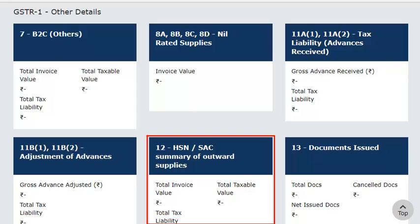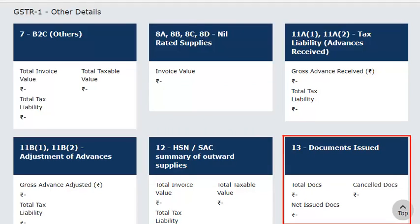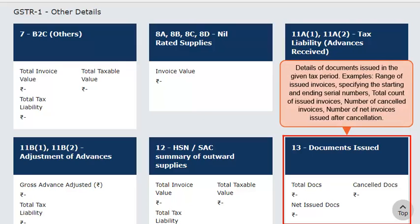The HSN-wise Summary of Outward Supplies will capture the HSN Classification Code-wise supply details. This tile captures the total taxable value of each item supplied and each service provided in the given tax period. Finally, the Documents Issued tile captures the details of documents issued by you in the given tax period, such as the invoice range specifying the starting and ending serial numbers of invoices issued, total count of invoices issued, number of invoices that were cancelled, and the number of net invoices issued after cancellation.